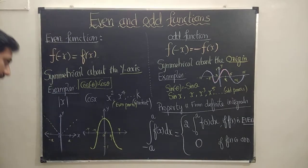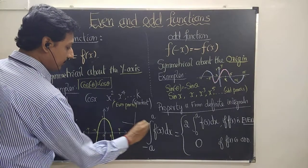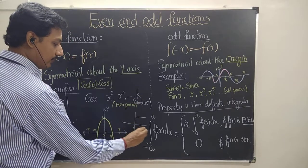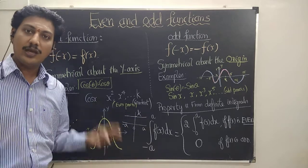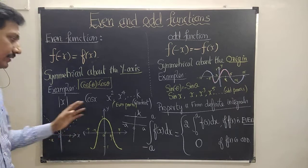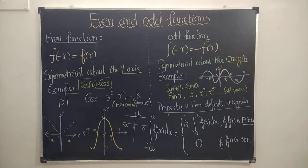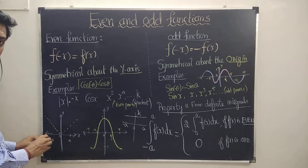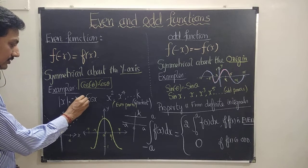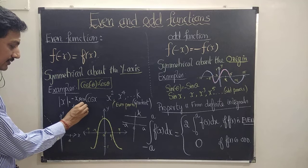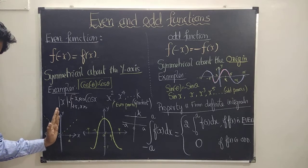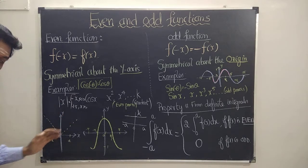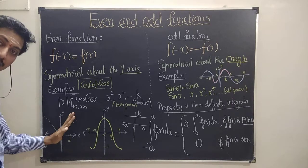A constant function f(x) = k has no change in its graph even when we replace x by minus x. Now let's see the graph of modulus of x. The definition is: mod x equals minus x if x < 0, and plus x if x > 0. The graph shows that when we fix the y-axis, the left side is a mirror reflection of the right side — that's why it is an even function.